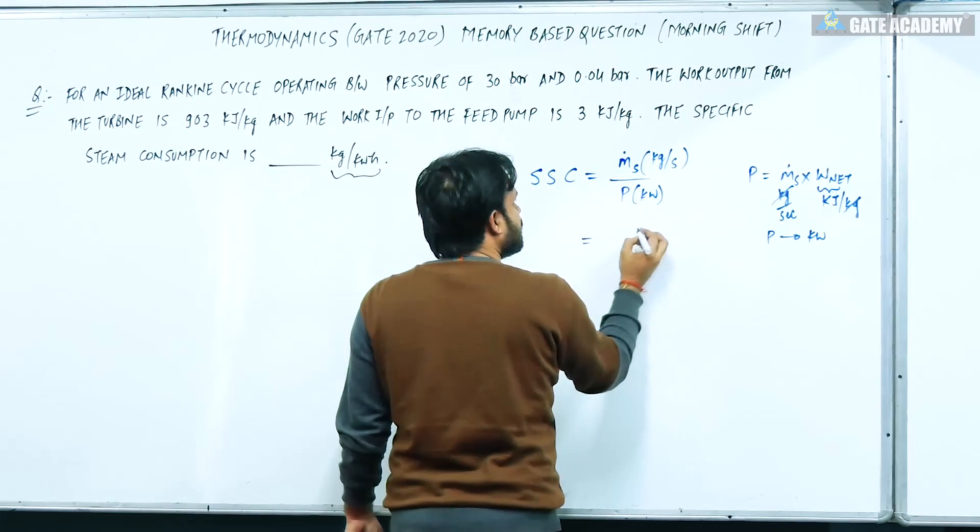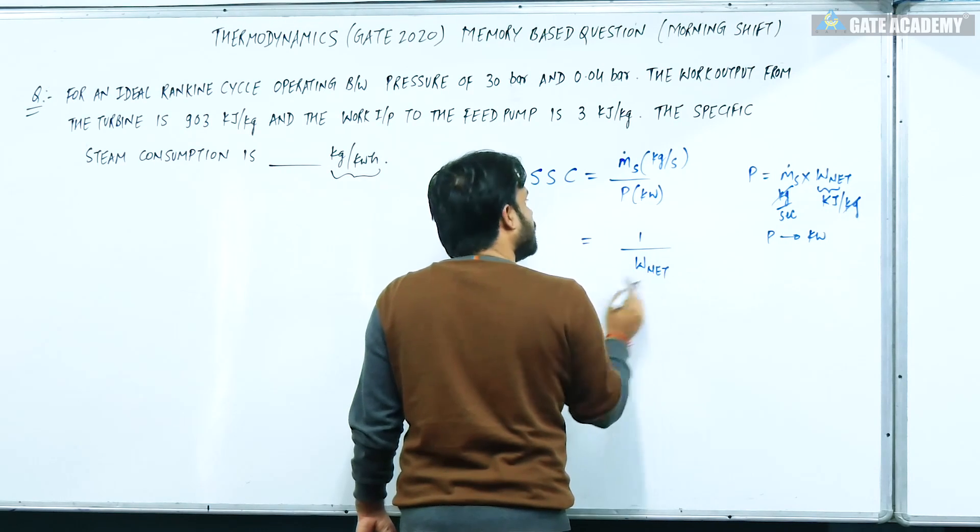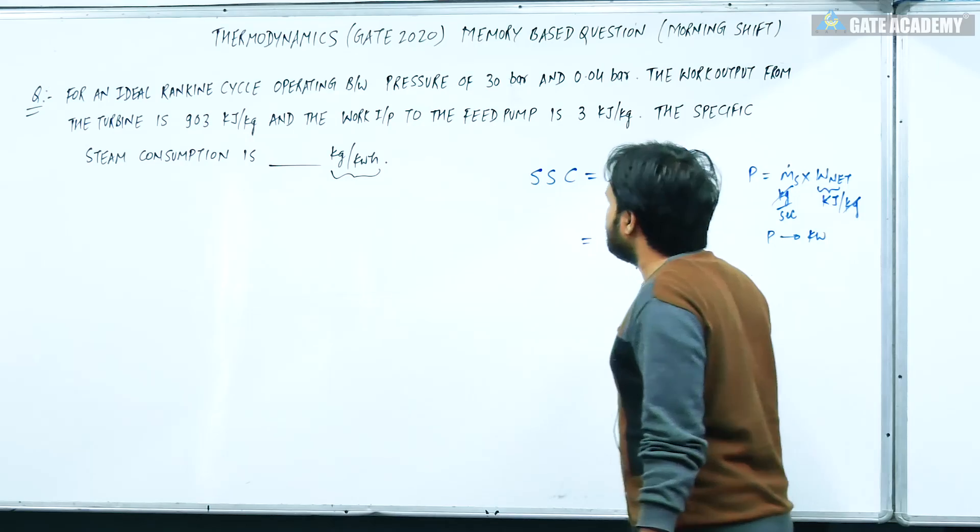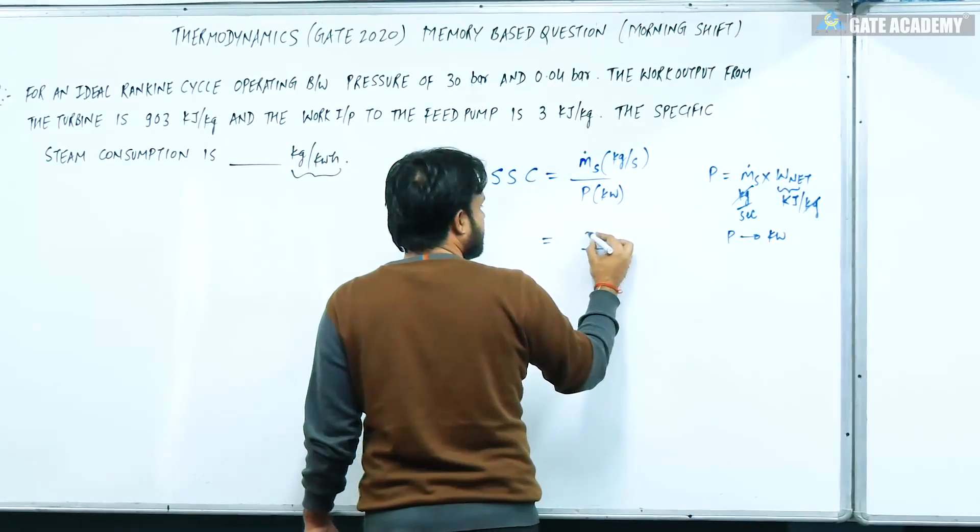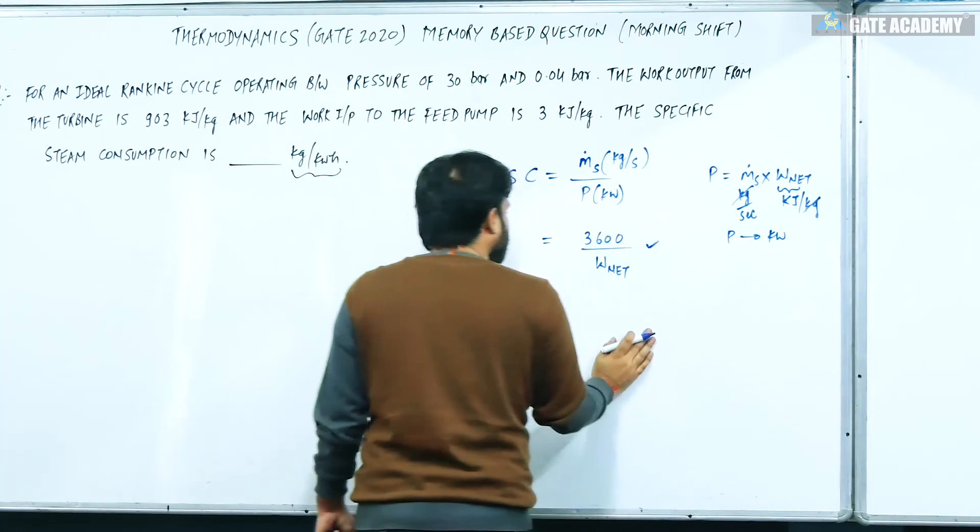If we put it here, then what will you find? 1 upon W_net. What will you find in kilojoule per second? Because what will you find in kilowatt, we will multiply it in kilowatt. So basically you have to calculate this W_net.